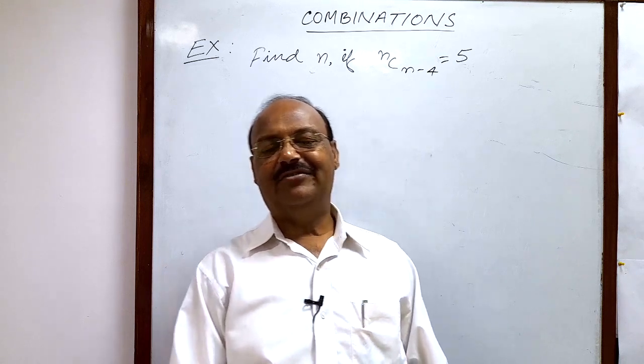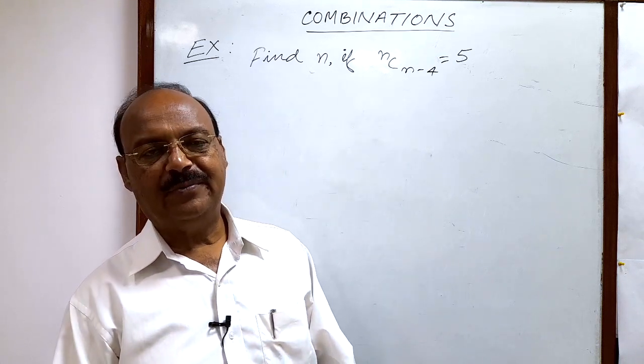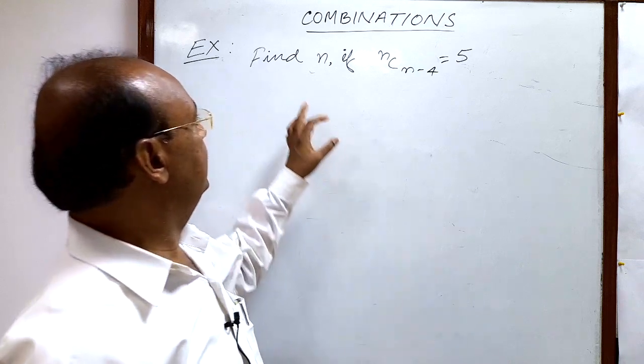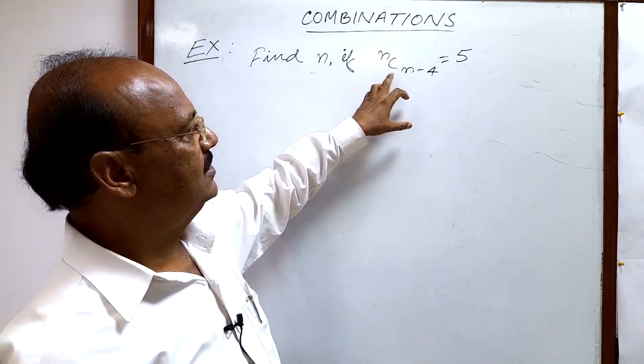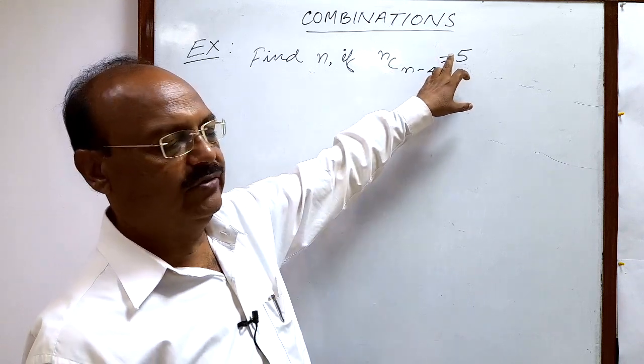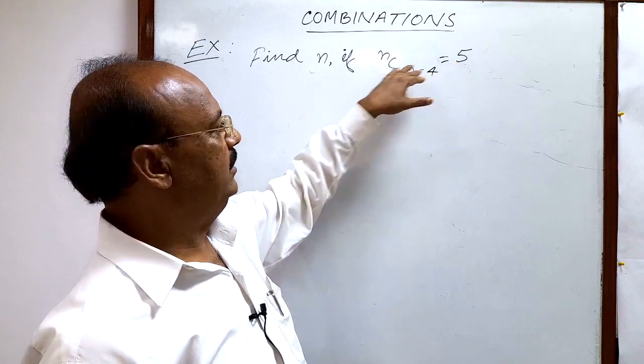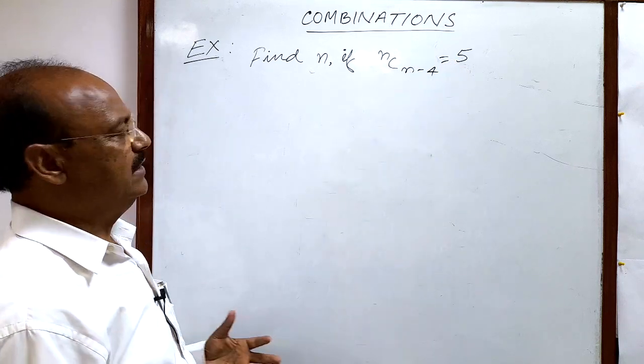Welcome students. Let us see a very simple question from the topic of combinations. Here the question is: find n if nC(n-4) is equal to 5. For solving this question, we will use a very basic